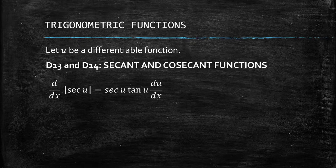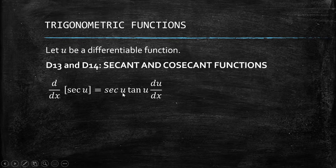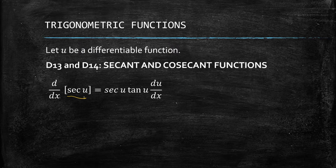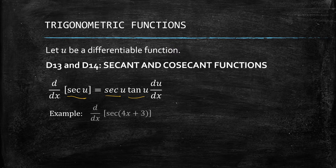The derivative of secant of u is sec(u)·tan(u) times the derivative of u with respect to x. The pattern here is: you have sec(u), and then sec·tan. Let's look at an example — say we have secant of (4x + 3).